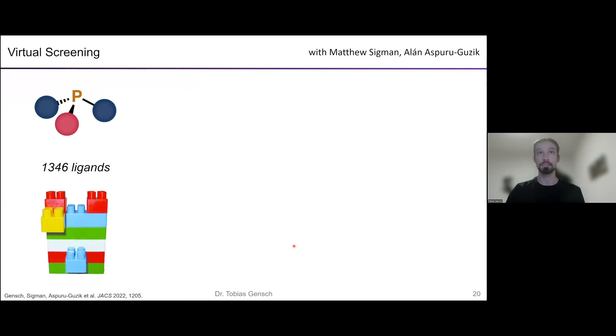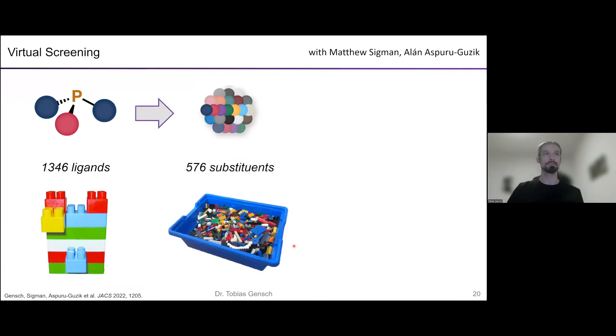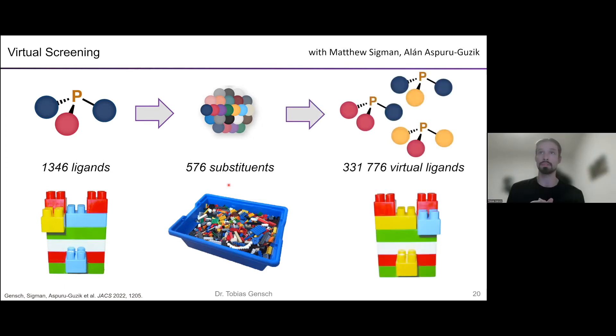First of all, how do we get to the 300,000? Basically, we treat our original library as a set of Lego. We take each ligand, chop off the substituents that are attached to phosphorus and throw them all in a bag. This leaves us with about 576 substituents that we have present in our original library. Then we go and take these substituents again out of the box and construct new ligands out of this. So basically it's a combinatorial enumeration of all ligands that have either one or two different substituents on phosphorus. The 300,000 is basically the square of the number of substituents. That's how we get to the virtual library.